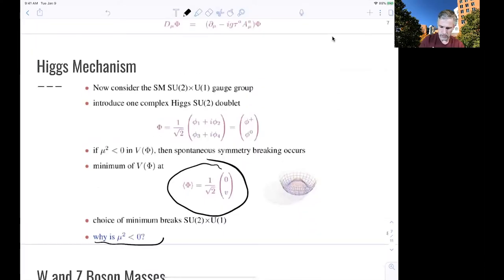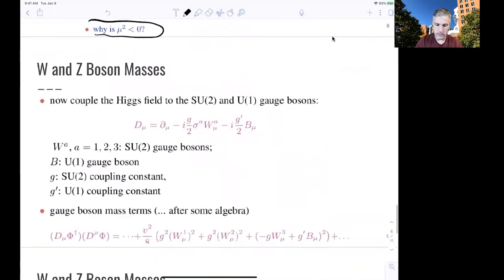Again, why mu-squared less than 0? Because if we would have chosen to use a positive value for mu-squared, we wouldn't have spontaneously broken the symmetry. Okay? So we need to have potential which looks like this Mexican hat here.